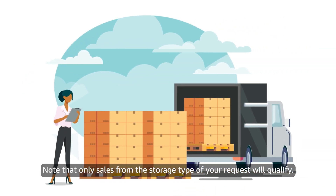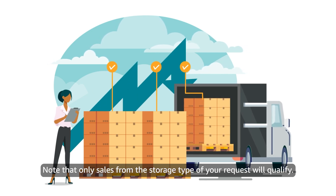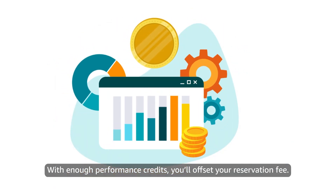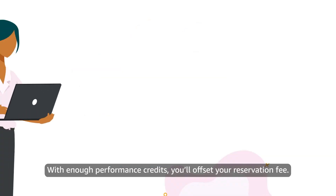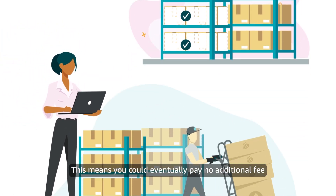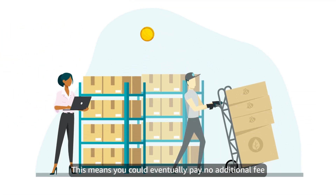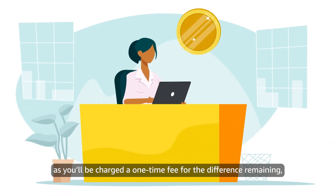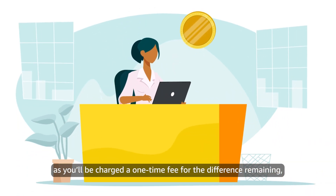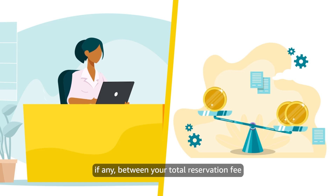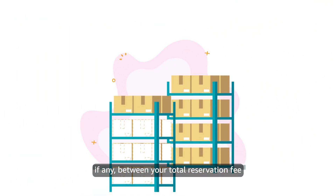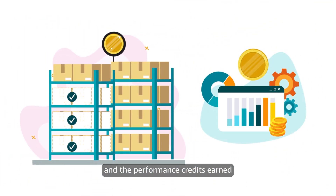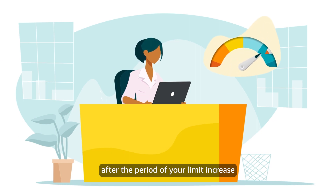Note that only sales from the storage type of your request will qualify. With enough performance credits, you'll offset your reservation fee. This means you could eventually pay no additional fee for your increase in storage, as you'll be charged a one-time fee for the difference remaining, if any, between your total reservation fee and the performance credits earned after the period of your limit increase.